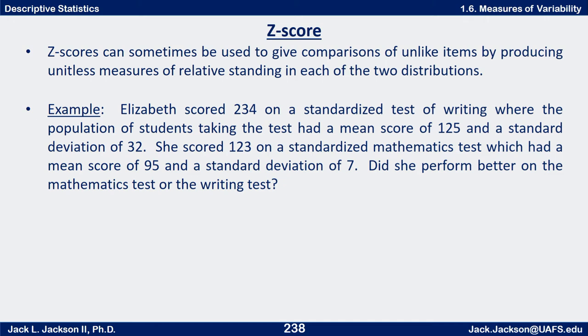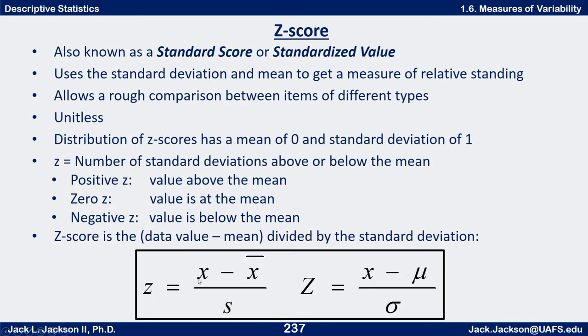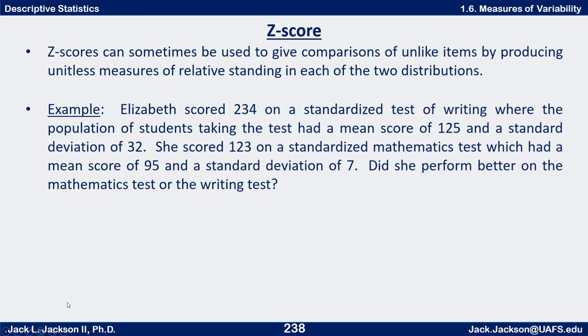What I would like you to do is use the formula we just had—the data value minus the mean divided by standard deviation—to find a z-score for the math test and the z-score for the writing test, then decide which one is better based on the z-scores. Go ahead and compute those, compare them, and come back to check your work.